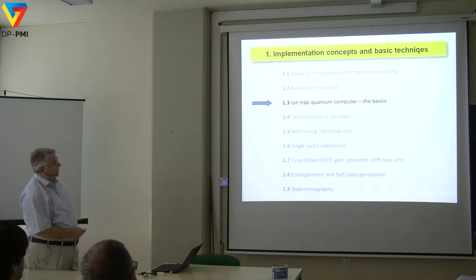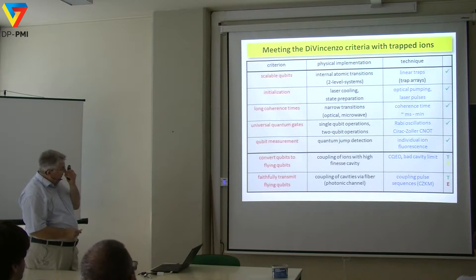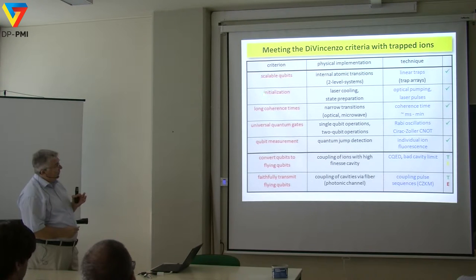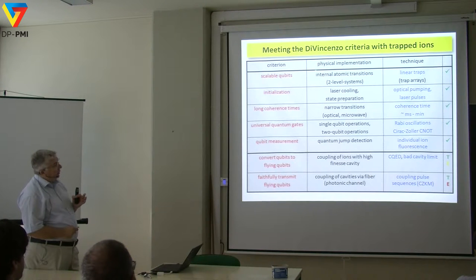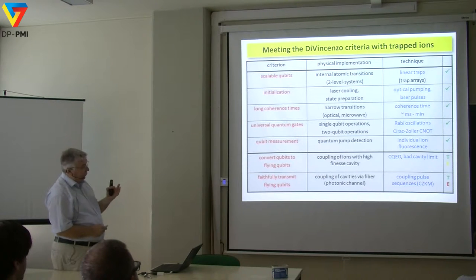This is a very busy slide — let me just walk you through a few things. These are the seven criteria: scalability, initialization, long coherence times, universal quantum gates, qubit measurements, and networking. The question is how we do this with ions in a trap. The internal atomic transition is usually the two-level system we use, and there's nothing like a real two-level system in a real atom — I'll show you how to make one.